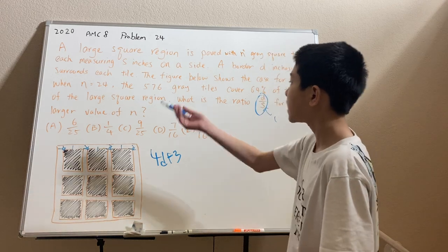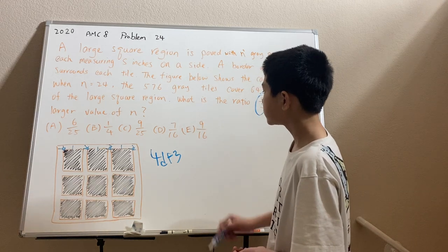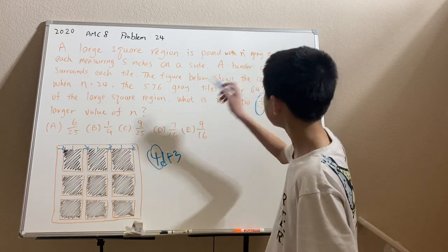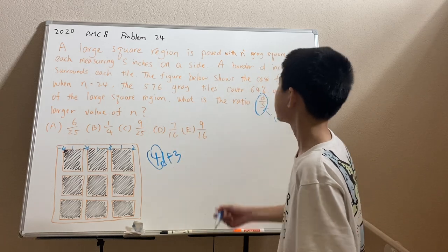So the side of the large square is then going to be, for example, when n equals 3, it's going to be 4. That's just n plus 1.